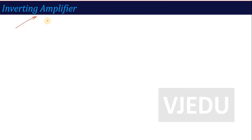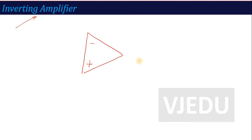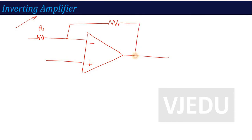The first circuit is the inverting amplifier. As the name defines, this amplifier performs both amplification and inversion — the input voltage undergoes a phase change along with amplification. In the practical circuit, we have the op-amp symbol with a negative terminal and positive terminal. We connect a resistance R1 to the negative terminal, and a feedback resistor Rf connects from the negative terminal to the output side. This output voltage is Vout.